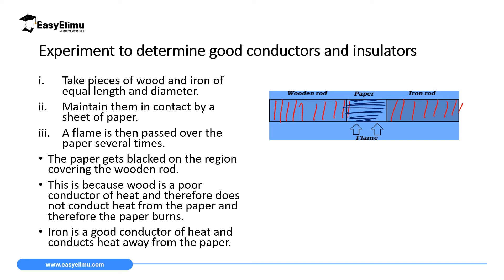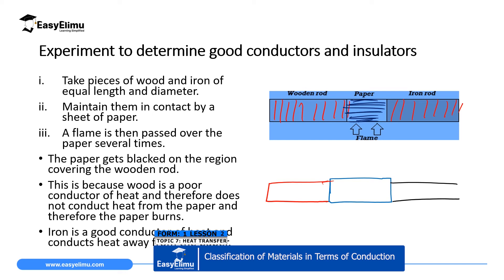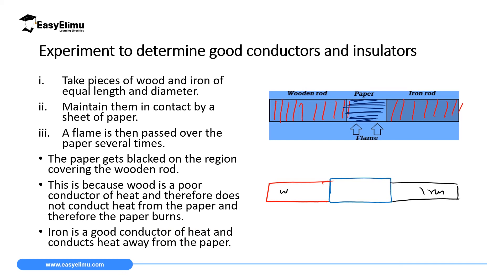Let me redraw this. If you have a section where you have the paper in the middle, with wood on one side and iron on the other side, after applying the flame at the joint, the paper on the wood side will be blackened, while the paper on the iron side will not be blackened.